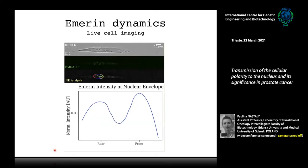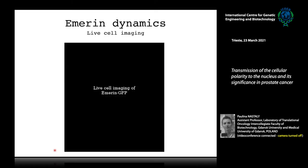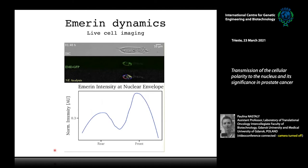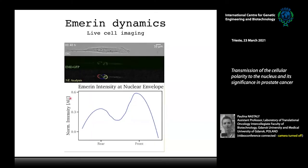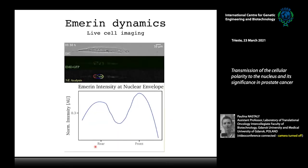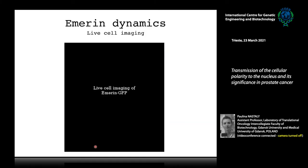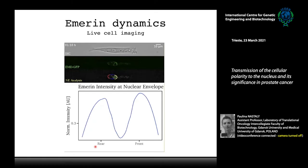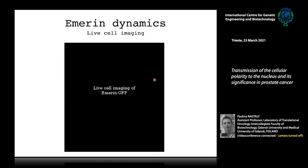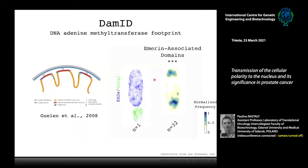Since the maps were prepared in fixed cells, I wanted to see if emerin enrichment could also be observed in living cells. In live cell imaging of cells transfected with an emerin-GFP construct, the normalized intensity graph shows the front and rear of the cell. Within this three-hour movie, emerin was enriched at the front edge of the nucleus, confirming this enrichment is a real, dynamic phenomenon.